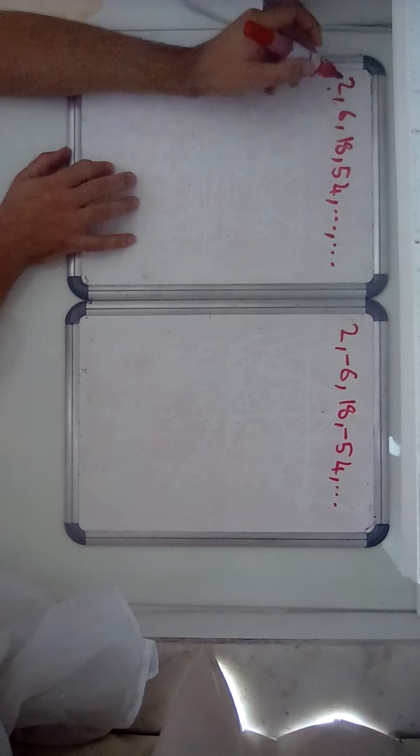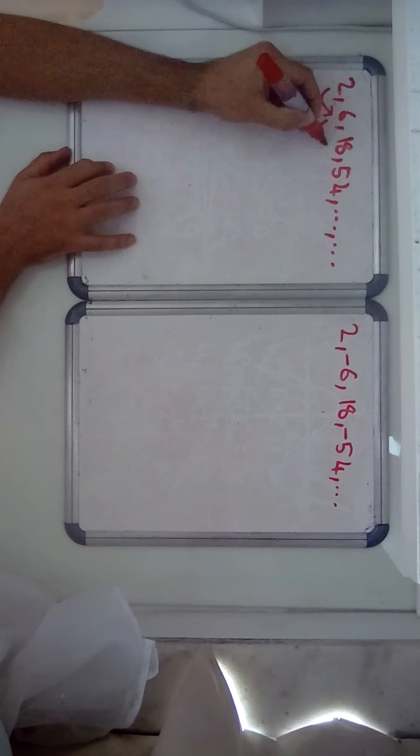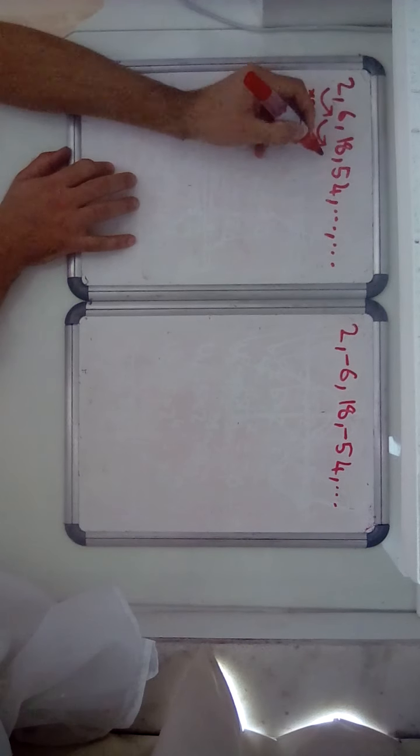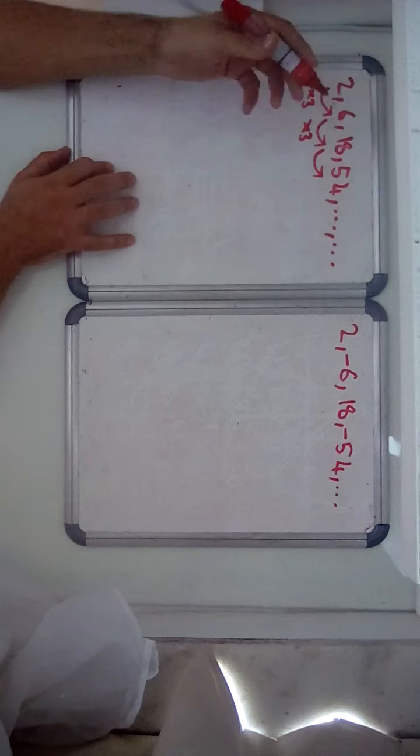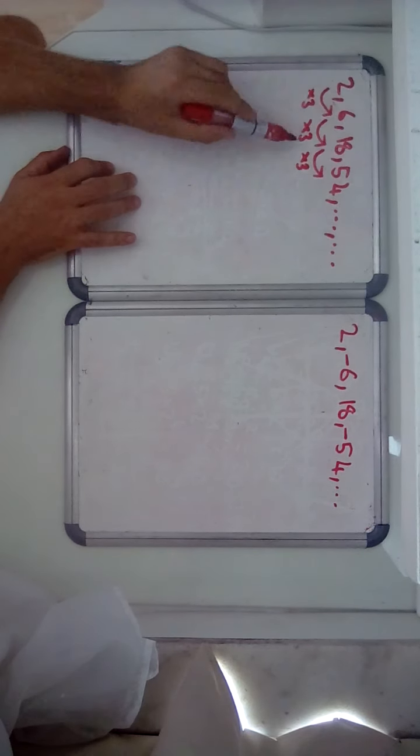6 times 3 is 18, 18 times 3 is 24, and 3 tens of 30, so that works. So it looks like a geometric progression.